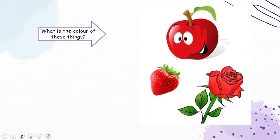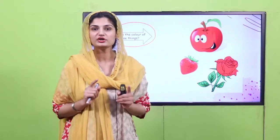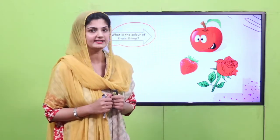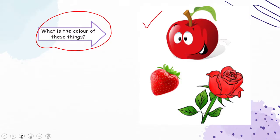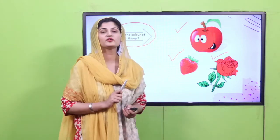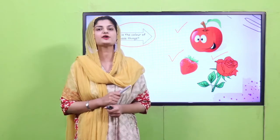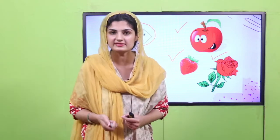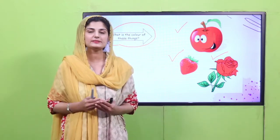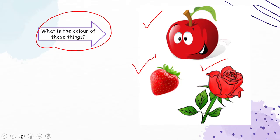These pictures are given on your book — let's name the pictures and the color. This is a red apple. This is a red strawberry. Red rose. Now you are going to tell the name of these things to your peer, your friend, or anybody around you. You have learned this — now you are going to say it and share it with anybody in your surrounding. Red apple, red strawberry, and red rose.